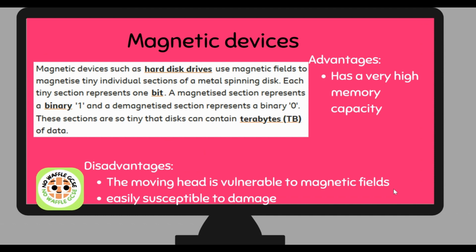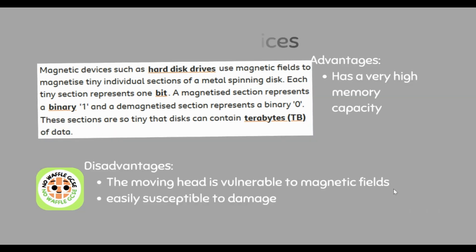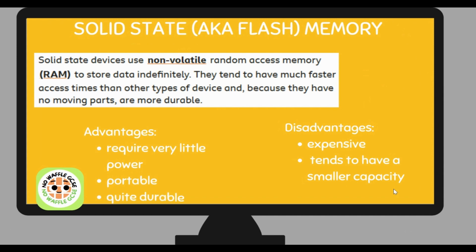You don't need to know too in depth about how magnetic storage works — just the advantages and disadvantages compared to other devices. Solid state devices use non-volatile random access memory, meaning data is still stored when the computer is turned off, stored indefinitely. They tend to have a much faster access time and, because there are no moving parts, are more durable and portable. Advantages: very little power required, portable, and durable. Disadvantages: expensive and tend to have a smaller capacity than magnetic storage.